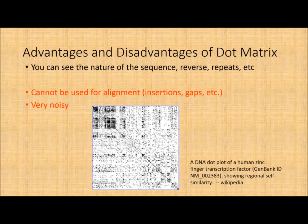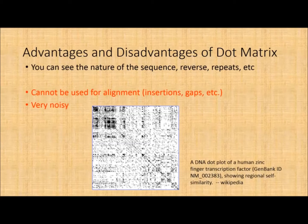In a real-life dot matrix situation, you can get qualitative information about reverses, repeats, etc. However, it cannot be used for alignment — there are no insertions, no gaps. In a real example, you can see it's very noisy. The diagonal being relatively empty tells you the sequences are not aligned, but there may be large regions of repeated similarity. Overall it can be a bit of a mess.